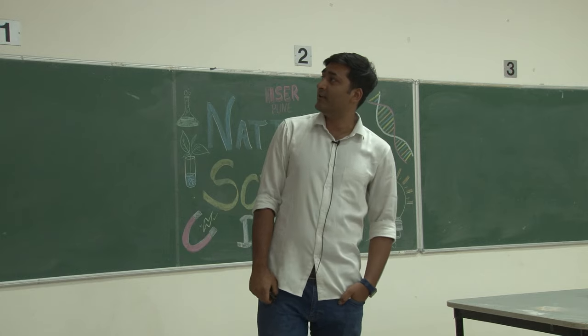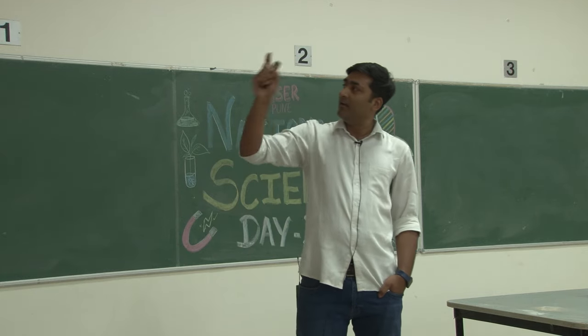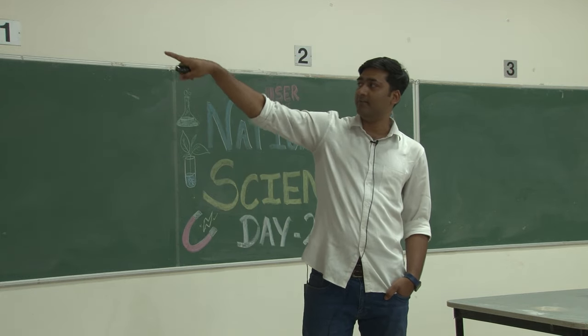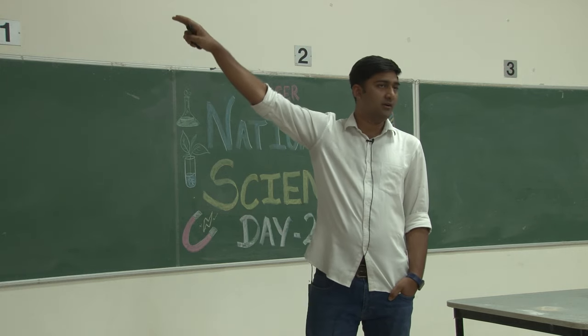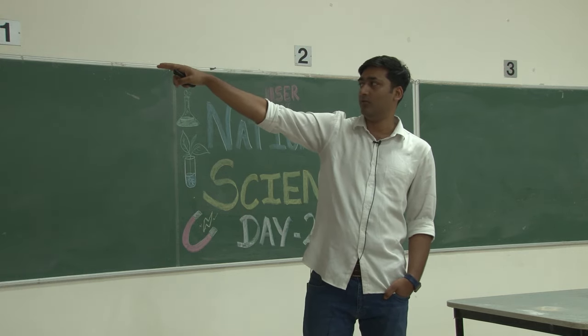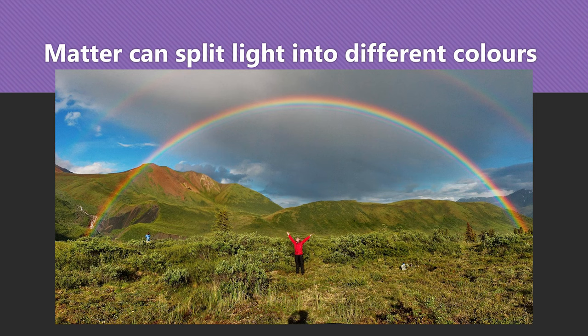So first thing is that in schools we can see white light from the prism. So prism can separate the colors into red, orange, yellow, green, blue. These all. Now why is this? Because the speed of colors is different in prism. So they can separate it.